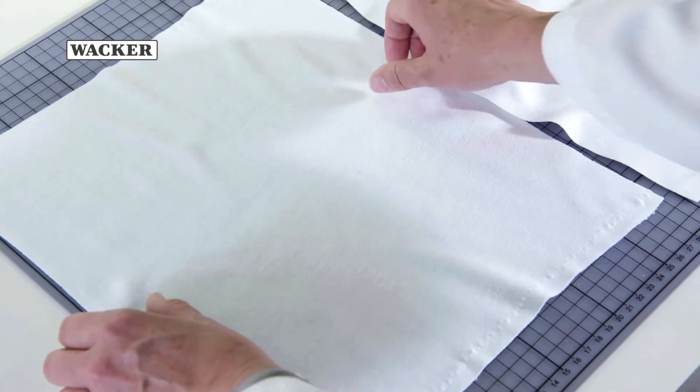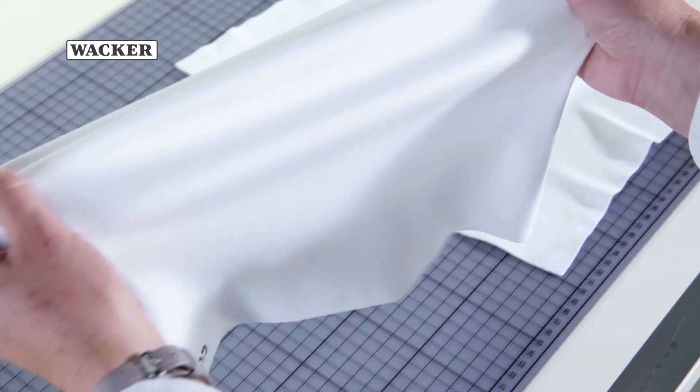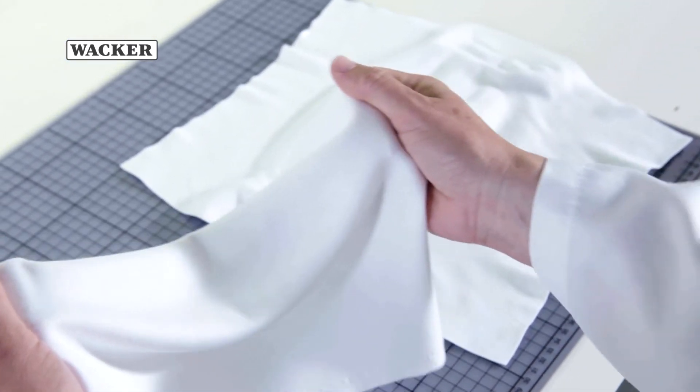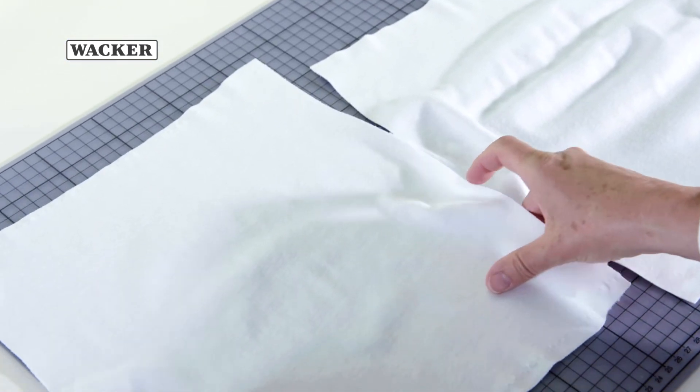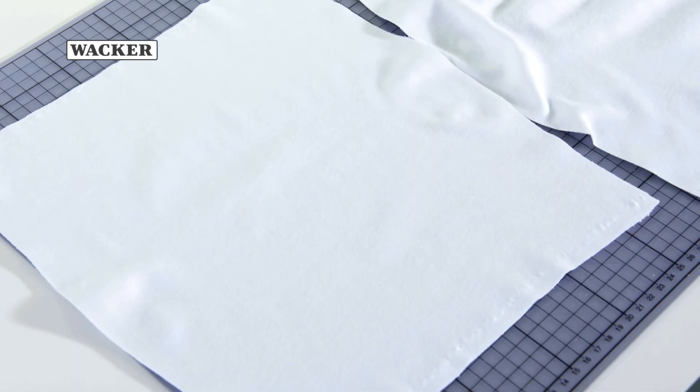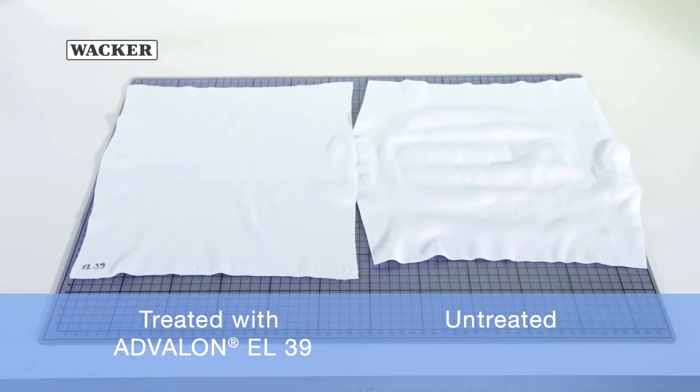The fabric treated with Advolon EL39 on the left does not show any wrinkling after stretching. The fabric returns to its original shape and displays visibly higher elasticity than the untreated fabric.